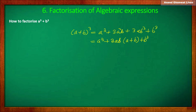It is equal to a cube plus 3ab into bracket (a plus b) plus b cube. Now transferring the term 3ab(a plus b), we get a cube plus b cube equals (a plus b) cubed minus 3ab(a plus b).